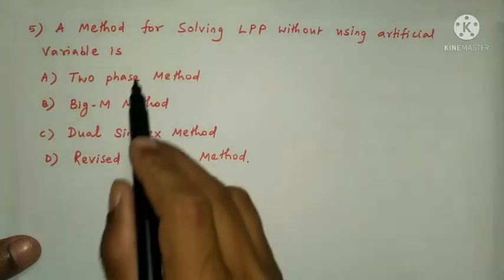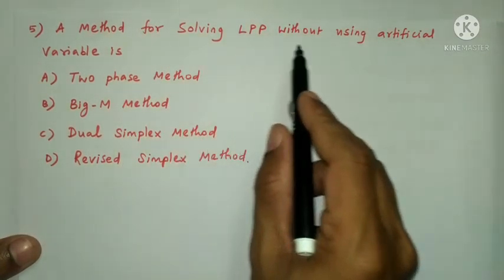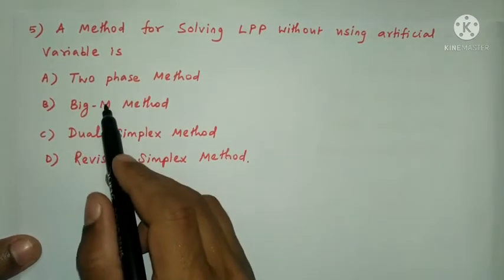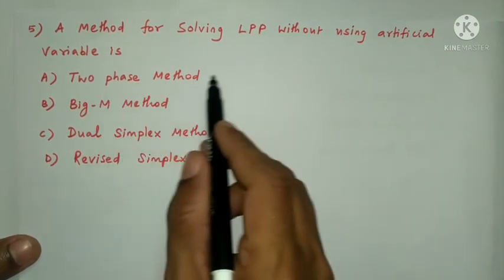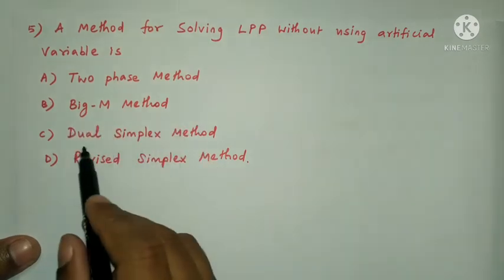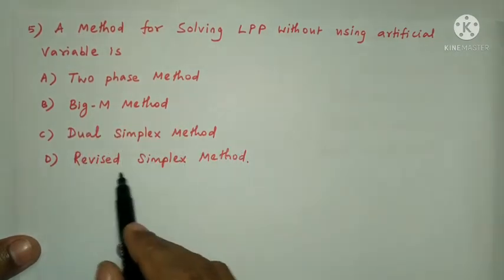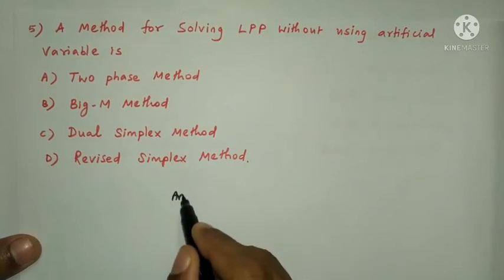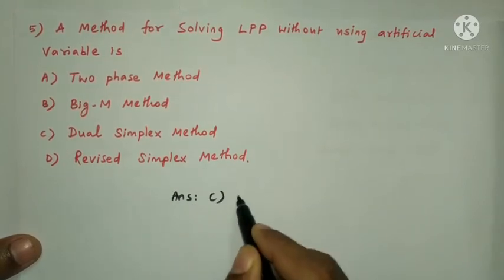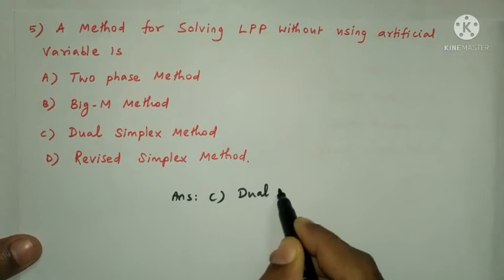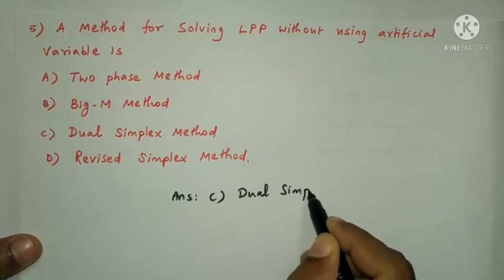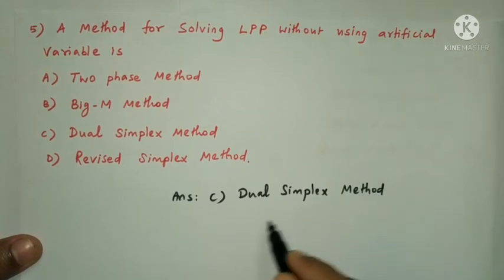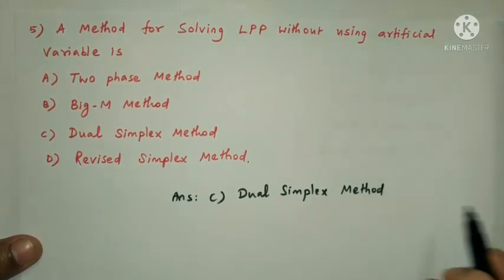Next question: a method for solving LPP without using artificial variables. Options are Two-Phase Method, Big-M Method, Dual-Simplex Method, and Revised-Simplex Method. The answer is Option C: Dual-Simplex Method, as it does not require artificial variables.